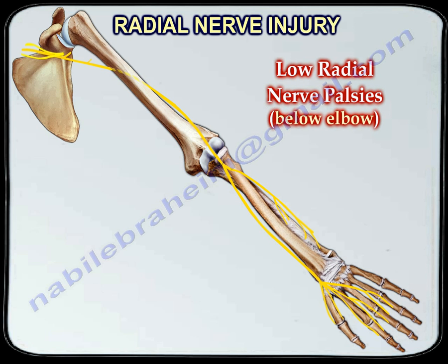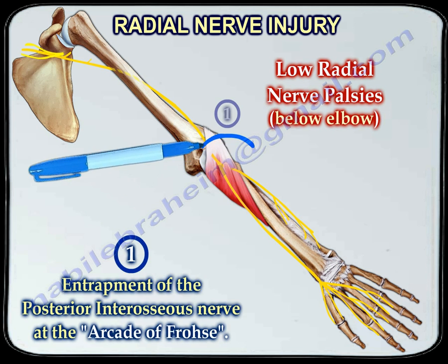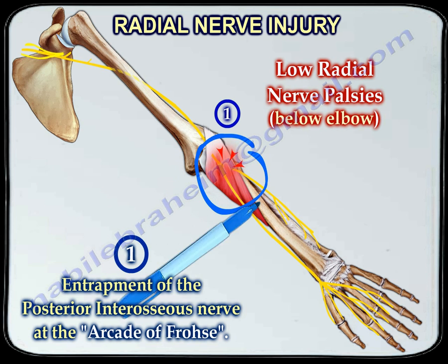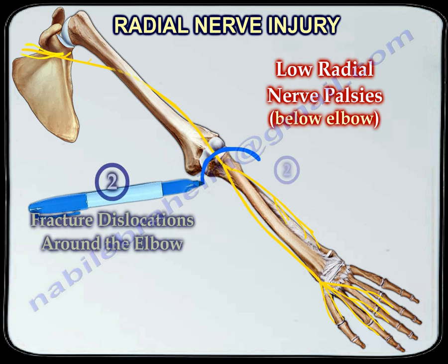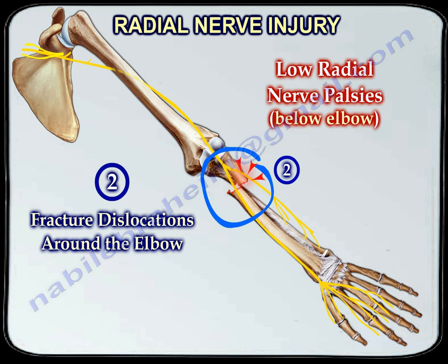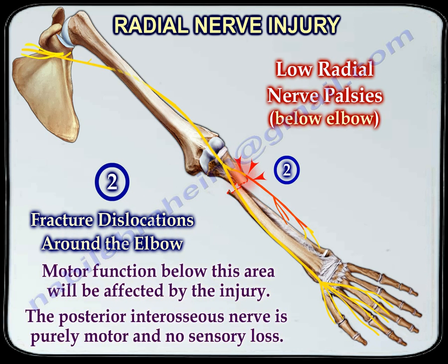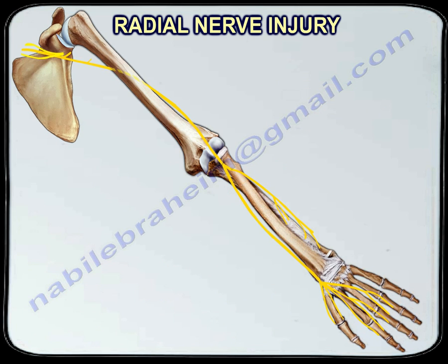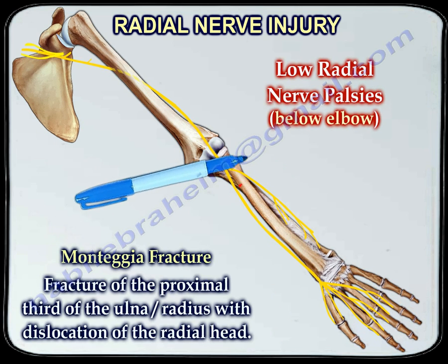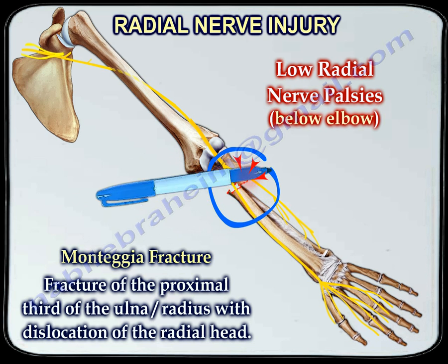Low radial nerve palsy occurs below the elbow. This can occur in a couple different ways, such as entrapment of the posterior interosseous nerve at the arcade of Frohse. It may also occur due to fracture dislocations around the elbow. Motor function below this area will be affected by the injury. The posterior interosseous nerve is purely motor and there will be no sensory loss. Another type of low radial nerve palsy may occur with a Monteggia fracture, which is a fracture of the proximal third of the ulna and radius with dislocation of the radial head.